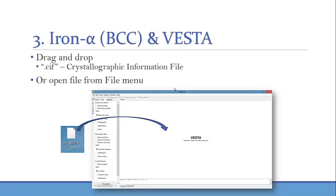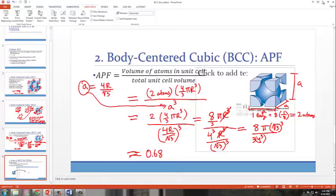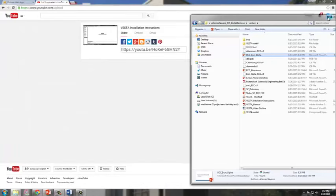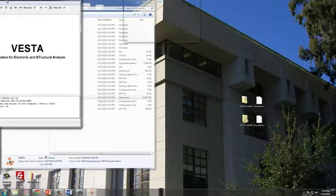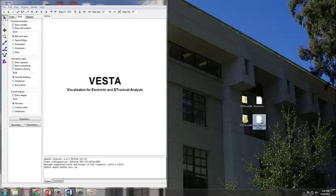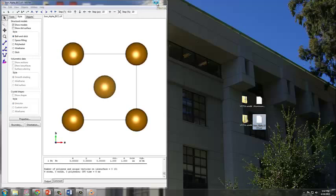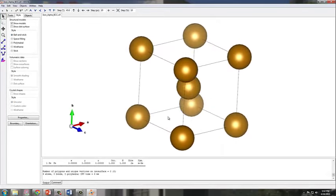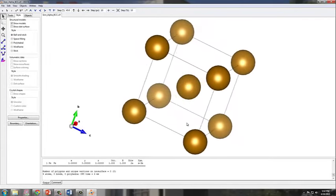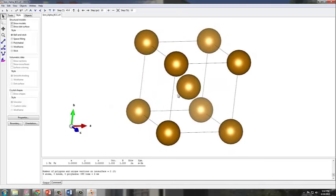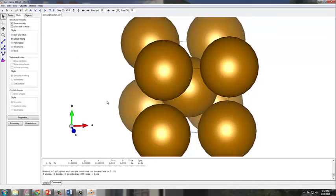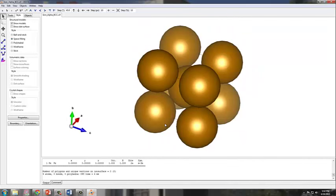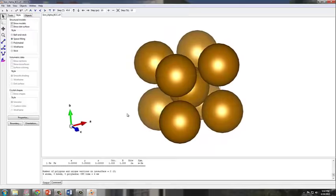Let's take a look at how ferrite, or alpha iron, looks like in the VESTA program. So let me just first get out of the slideshow here. Let's discard that, go to the desktop. Here, let me open up my program. And then I'm going to drag and drop my ferrite. As you can see, this is ferrite and it's body-centered. Why? Because you have one atom in the center, the body, and then you have eight corner atoms. And let's quickly look at the space-filling configuration, or the style.